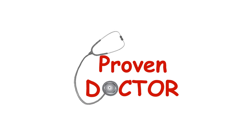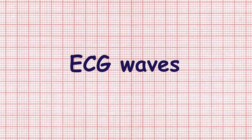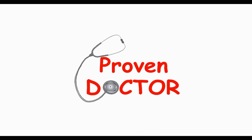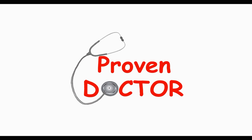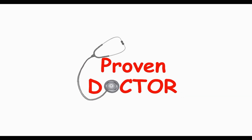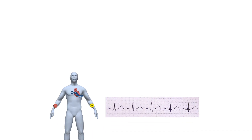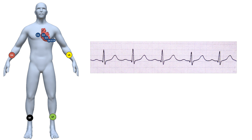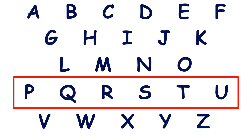Welcome to Proven Doctors with another episode of ECG Basic. In this video we will speak about ECG waves. ECG uses external electrodes to measure the electrical conduction signals of the heart and record them as characteristic lines. Six letters are used to describe deflections from baseline on ECG.